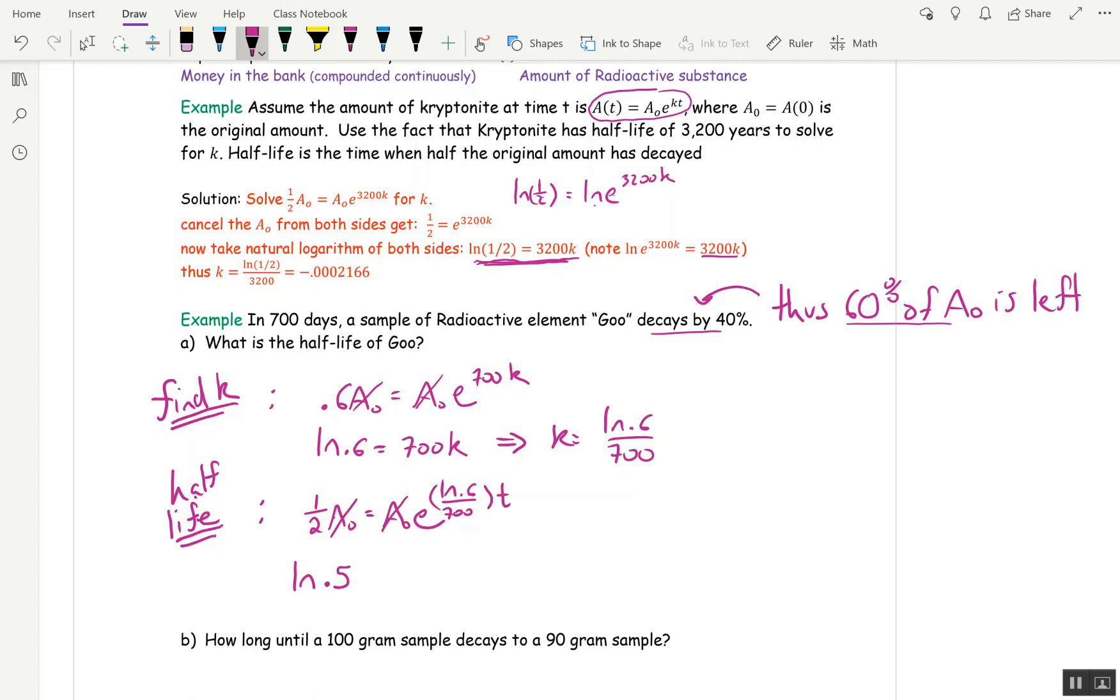ln of 0.5, I'm going to write 1 half as 0.5 just to cut down on the amount of fractions I have. When I take ln of e to all this stuff, I just get all this stuff. ln of 0.6 over 700 t. Finally, multiply both sides by the reciprocal of this fraction. So the 700 comes upstairs. So t is, this implies t equals 700 ln of 0.5 divided by ln of 0.6.